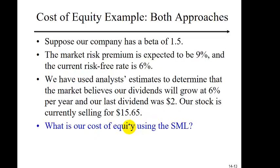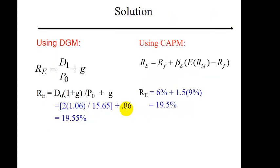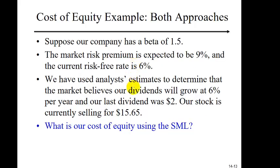Let's work one more example using both approaches. Take out your scratch paper, pen, and calculator. The market risk premium is 9%, the risk-free rate is 6%, dividends grow at 6%, and the last dividend paid is $2. The stock is currently selling for $15.65. Note that the dividend given is the last dividend paid, so you need to grow it by one more period. Pause the video and work out your numbers before checking the answers.